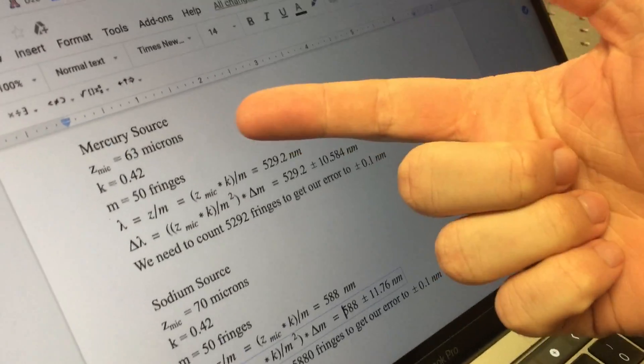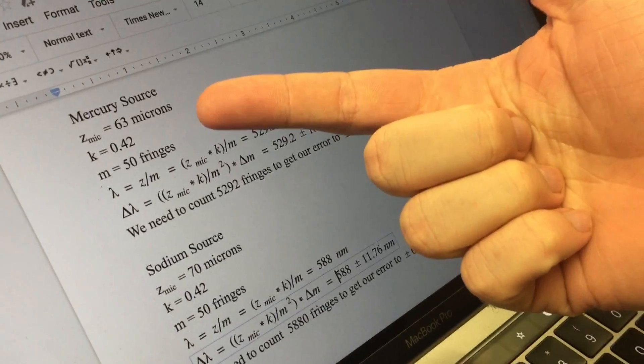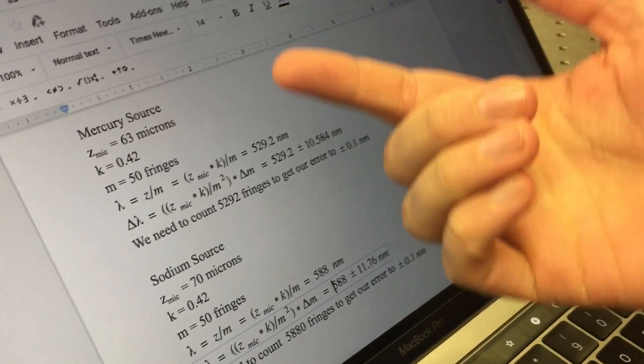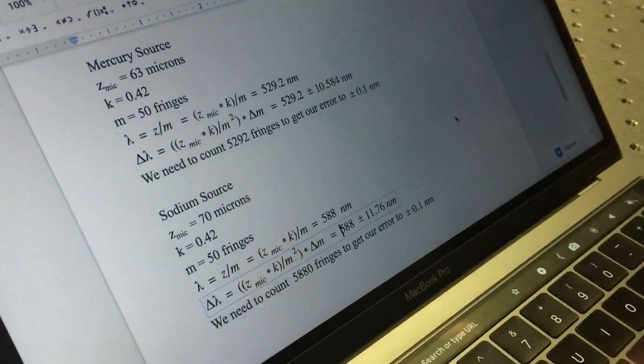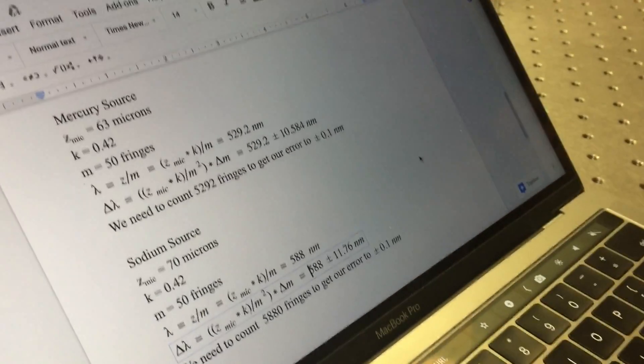Adjusting our micrometer, we got 63 microns, and using our calibration factor from the last lab, we got 0.42. We counted the number of fringes that displaced, giving us a wavelength of 529.2 nanometers.